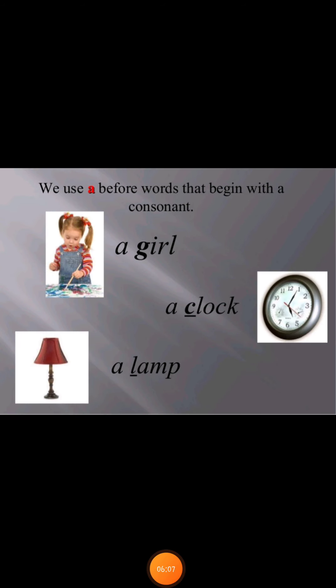We use a before words that begin with a consonant — like a girl, a clock, a lamp. G and l are consonants.